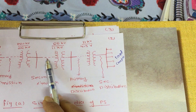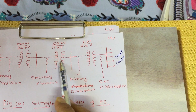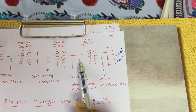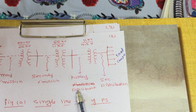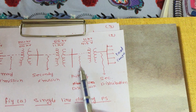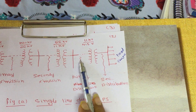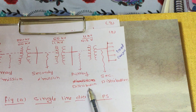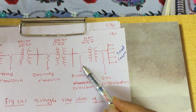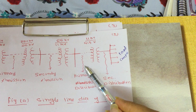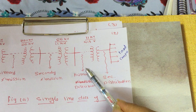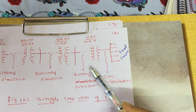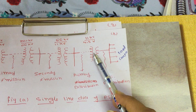Here, 66 KV is available, and using a step-down transformer it becomes 11 KV. This 11 KV section is termed as the primary distribution line. Huge companies can get power supply at this high voltage level from here. So this section is known as primary distribution.